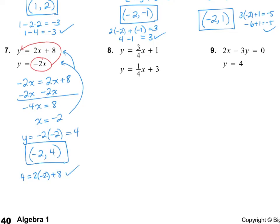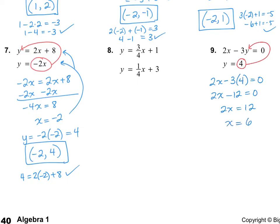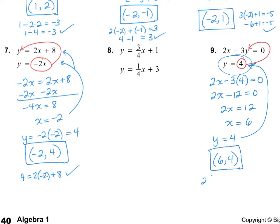Number 9: I have y equals 4, so I just need to plug in 4. We get 2x minus 3 times 4 equals 0, so 2x minus 12 equals 0. That means 2x equals 12, so x equals 6. Since I'm already told y equals 4, my answer is (6, 4). I'll double-check with the top equation: 2 times 6 minus 3 times 4 equals 0 — that's 12 minus 12 equals 0, which is correct.